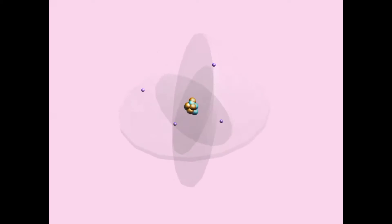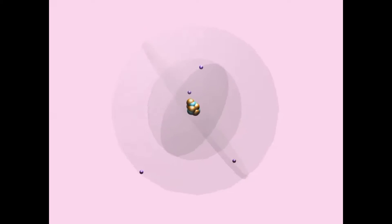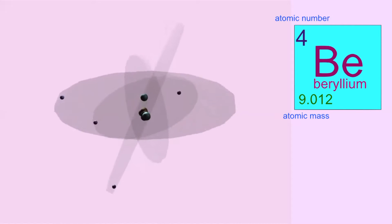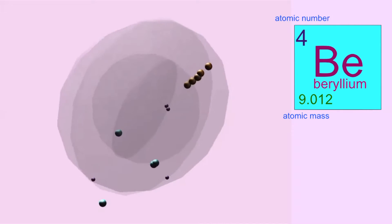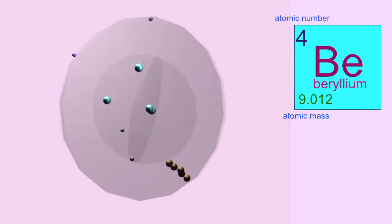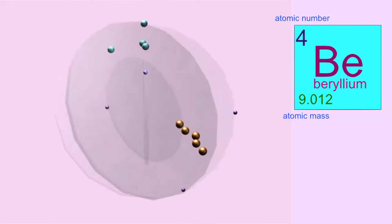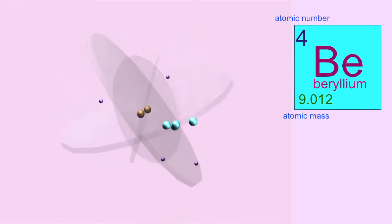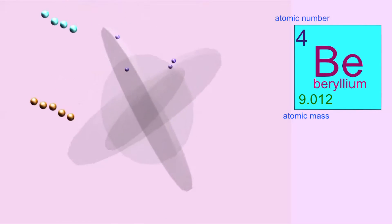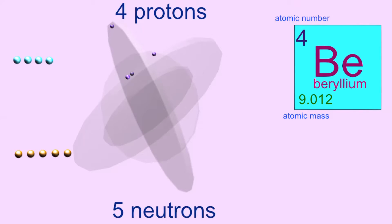The element beryllium has the atomic symbol Be and the atomic number 4, which indicates there are four protons in the nucleus and four electrons in a neutral atom of beryllium. The atomic mass number is 9, indicating that there are nine heavy particles in the nucleus, four of which are protons and five are neutrons.